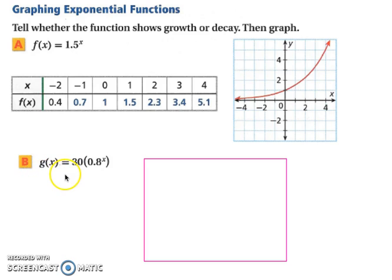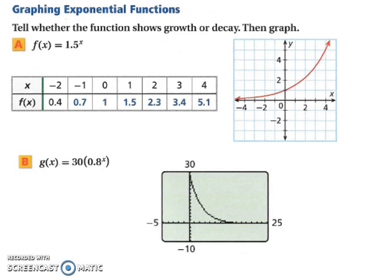So now let's look at b. We have our a value, but then our b value, so it was 0.8 to the x. Our b value is less than 1. Therefore, it's going to be a decay. And notice how a, our 30, that's where it crosses the y-axis.